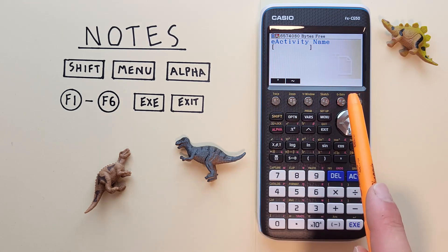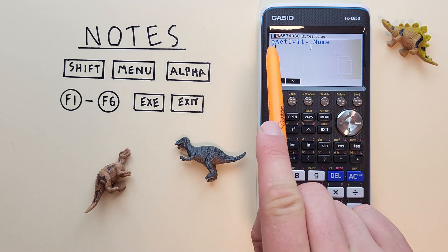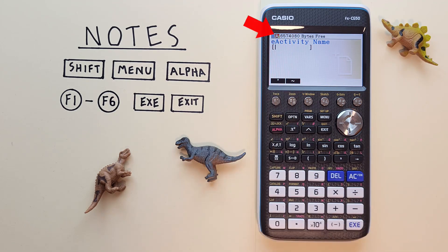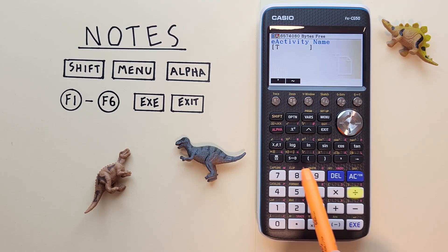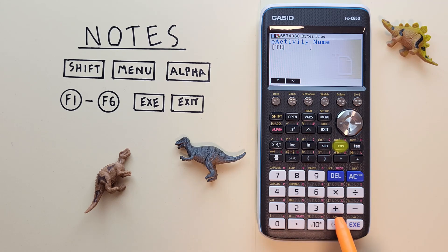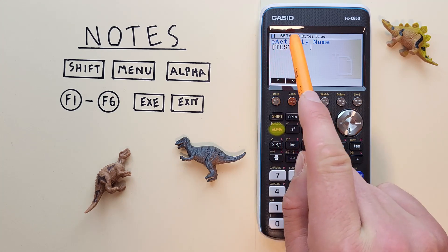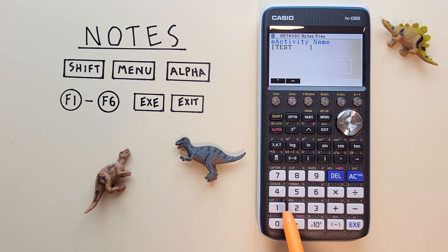Now we can name our note. We see here at the top of the screen we have an A with a lock on it. That tells us our alpha key is engaged and when we type we'll be using the red letters above the keys. Let's call this one test. We've got a name for our note. If we want to put a number in there we can hit the alpha key so that the alpha lock goes away and we can enter a number. So we'll call this test one. We're done, so we hit EXE.